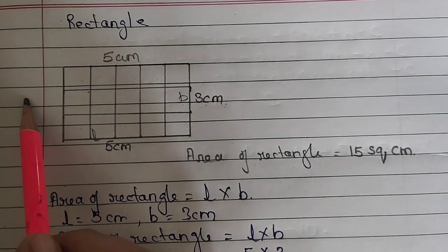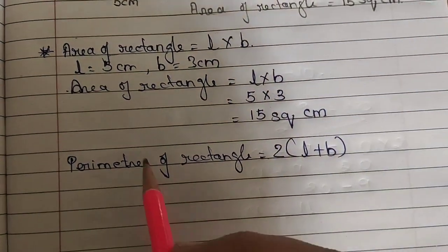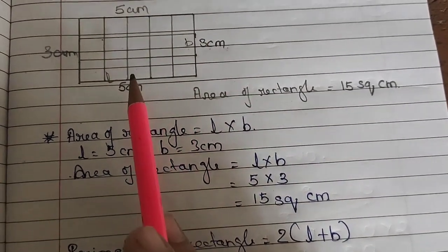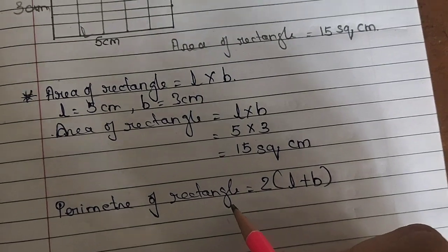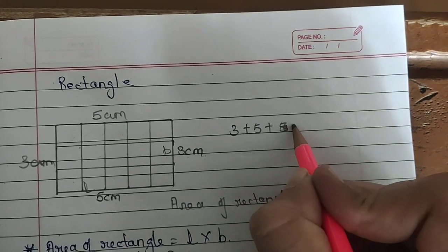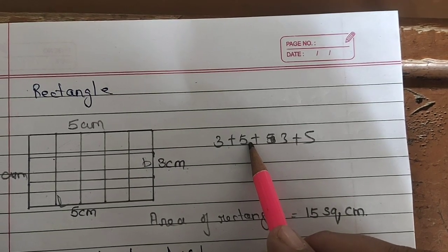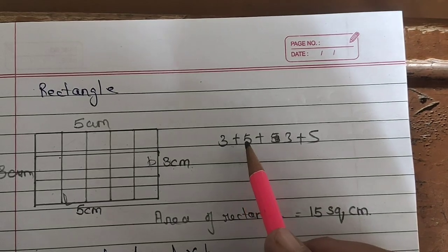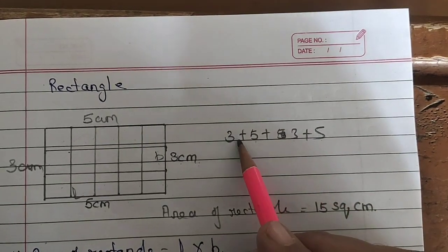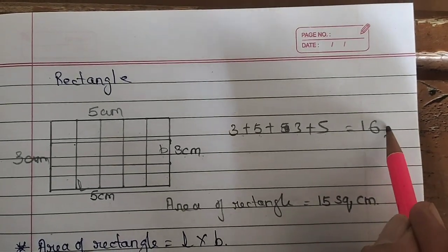This side is 3 cm, so the opposite side is also 3 cm. So we have sides: 5, 5, 3, and 3. If we add all sides: 3 + 5 + 3 + 5 = 16 cm. So the perimeter is 16 centimeters.